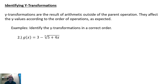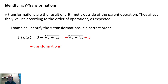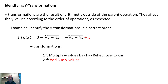Example two: g(x) = 3 minus the cube root of (5 + 4x). Let's find the Y-transformations. It's written awkwardly, so rewrite it as negative cube root + 3. Now you can easily identify the operations happening to the parent operation — multiplication by negative and adding 3. Following order of operations: first, multiply Y values by negative 1, giving a vertical reflection over the X-axis. Then add 3 to the Y values, shifting the graph up 3 units.